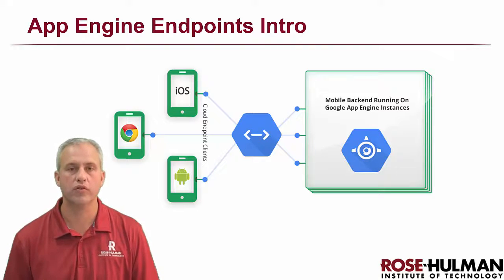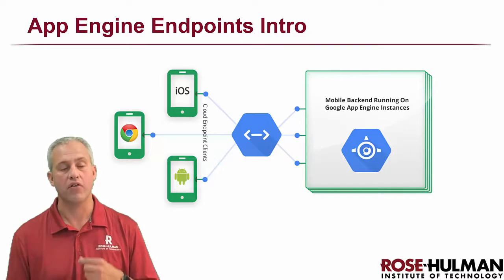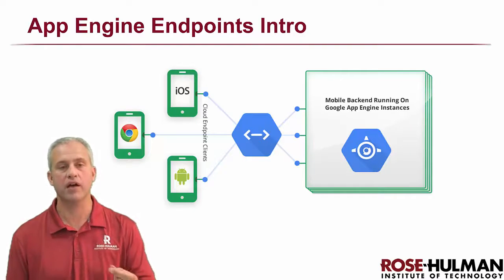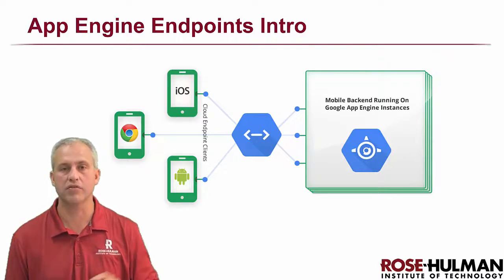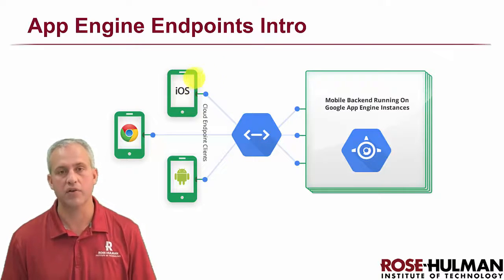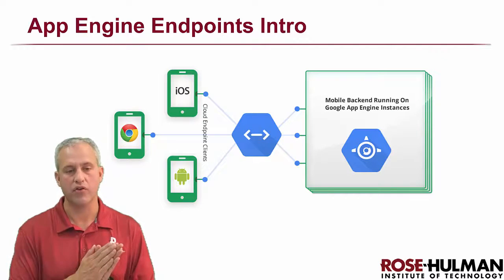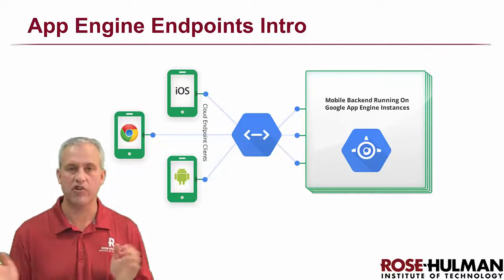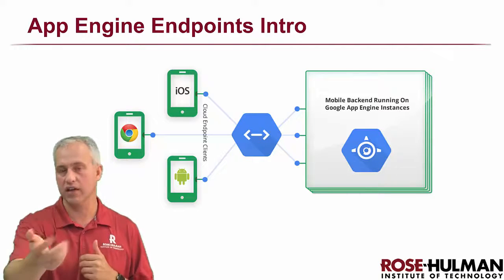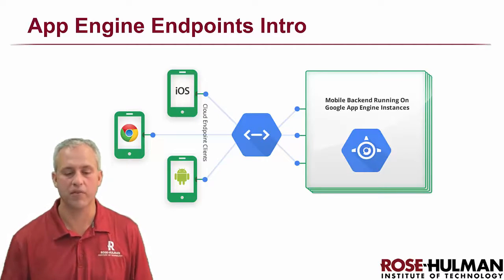Endpoints is a tool that you can use to make a JSON API. This JSON API can be used by any number of clients — it can be used by an iOS client, an Android client, or a web client as well. You can make a web app that uses purely Ajax for getting all of its data and for sending all of its data back up to the server.